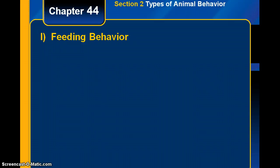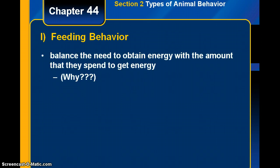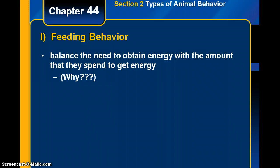The first type of animal behavior is feeding behavior — behavior that animals use to eat. When animals feed, they need to balance the need to obtain energy with the amount they spend to get energy. If they have to spend so much energy going to get food, is it worth it?